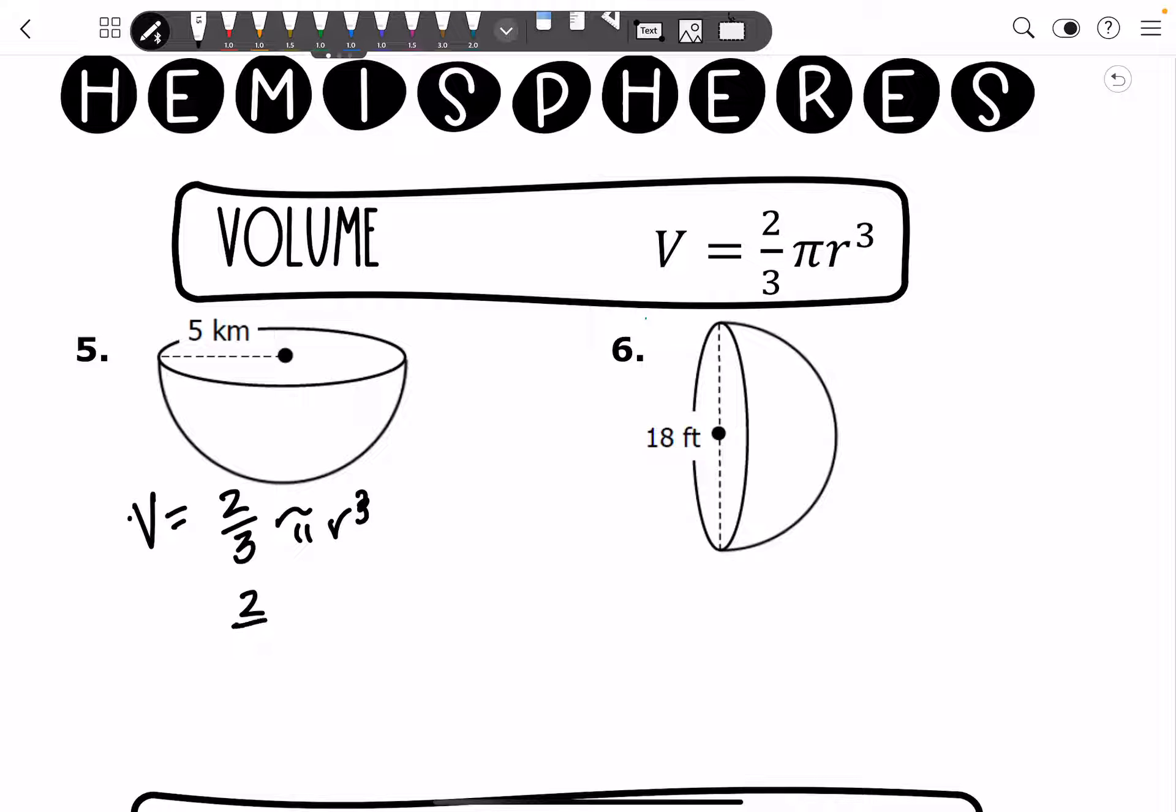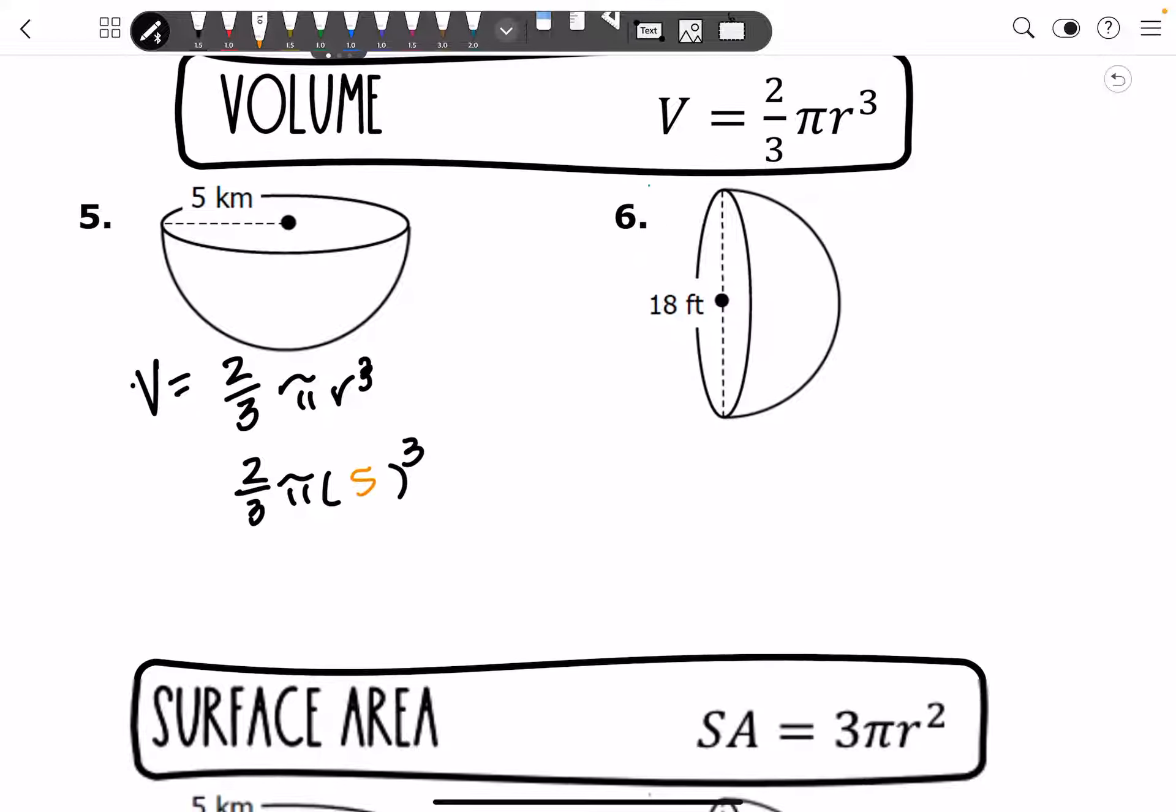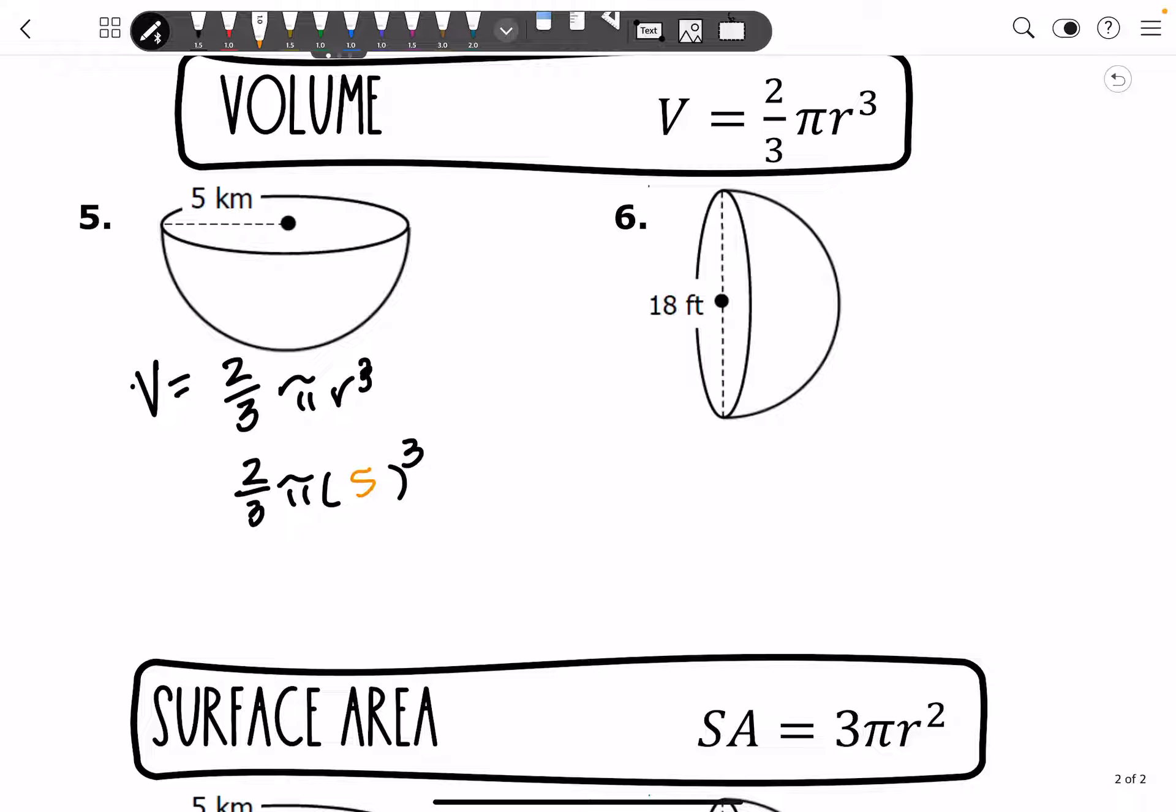So we get 2 thirds times pi 5 cubed. And we're going to do 5 cubed. And then multiply that by 2 and put it over 3. And that's 250 pi over 3. And your units are going to be kilometers cubed.